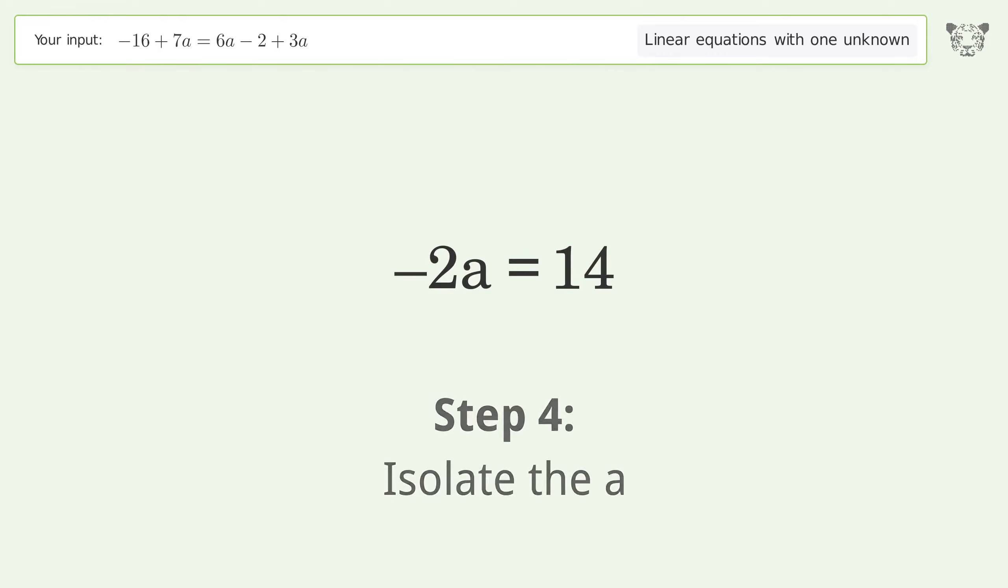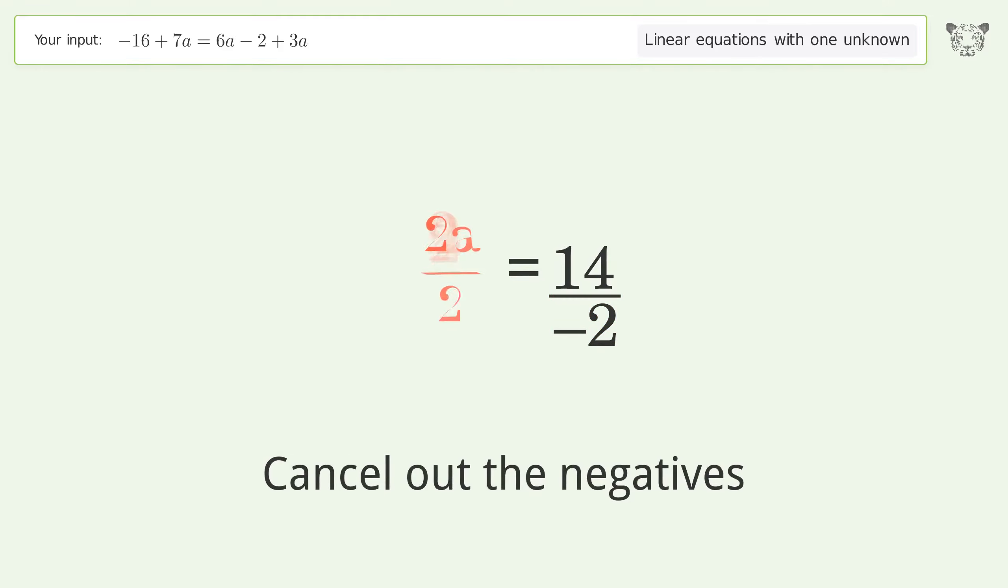Isolate the a. Divide both sides by negative 2. Cancel out the negatives. Simplify the fraction.